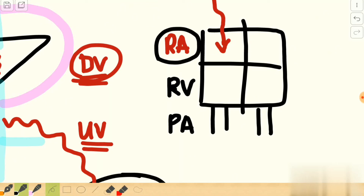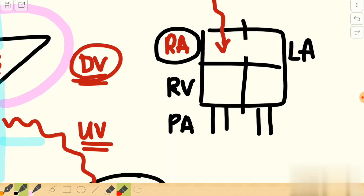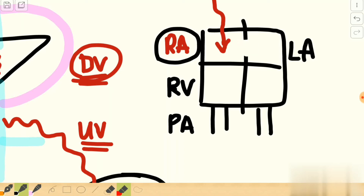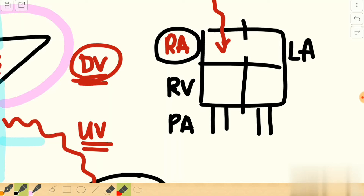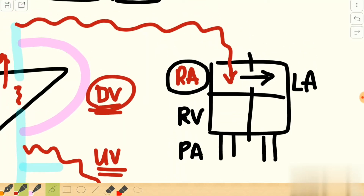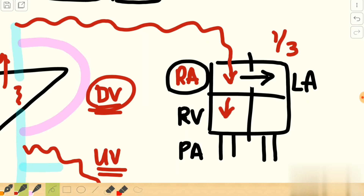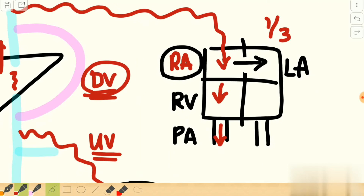This also means the pressure in the right atrium is higher than the pressure in the left atrium. The second important point is that there is an anatomical opening between the right atrium and the left atrium — the foramen ovale. Because of this pressure difference, blood flows from the right atrium to the left atrium. Keep in mind that this shunting occurs for only one third of the blood volume.